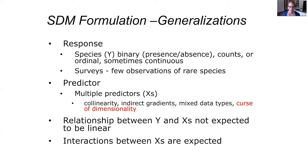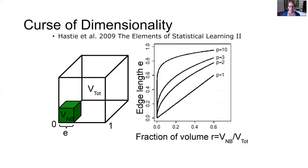In terms of ecological theory, at least if our variables represent more direct gradients, we actually have a theoretical expectation of the shape of the response function or response curve. It's not expected to be linear. Furthermore, niche theory suggests there are probably interactions between the predictors or explanatory variables in a world with multiple environmental factors affecting species distributions.